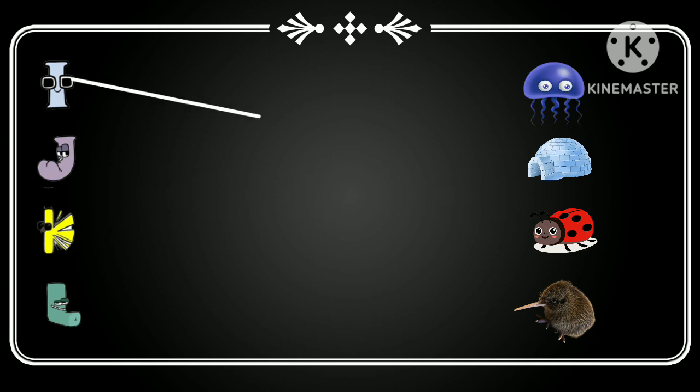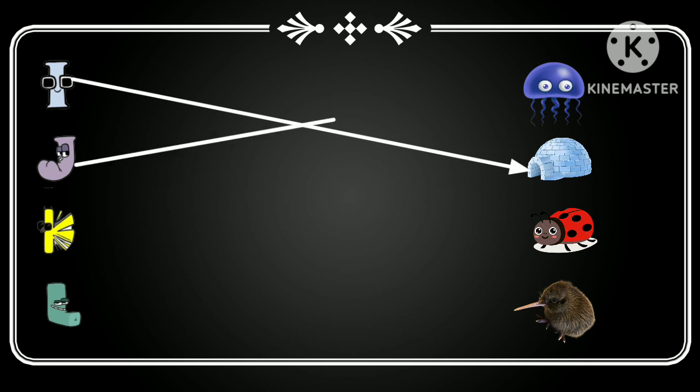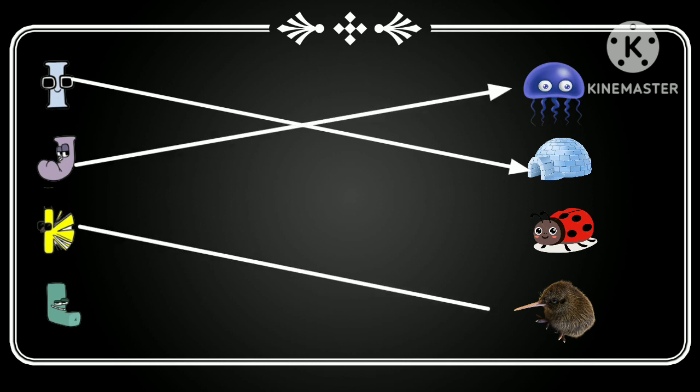I for Igloo, J for Jellyfish, K for Kiwi, L for Ladybug.